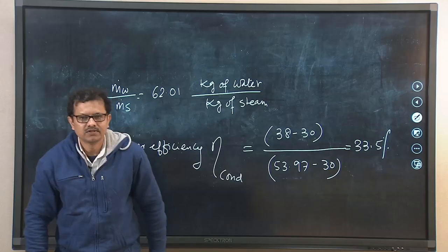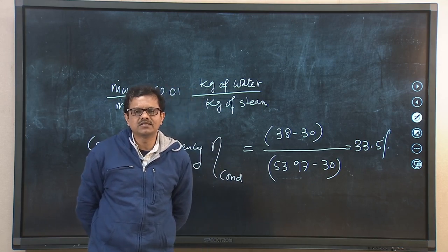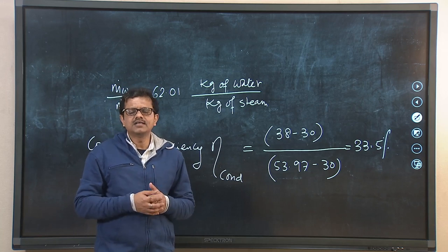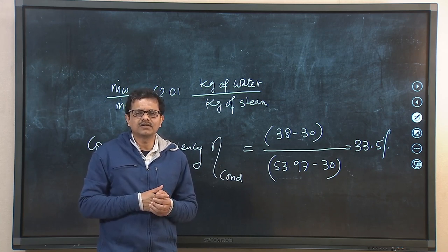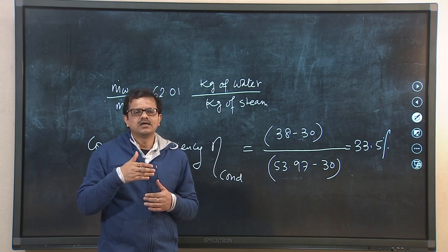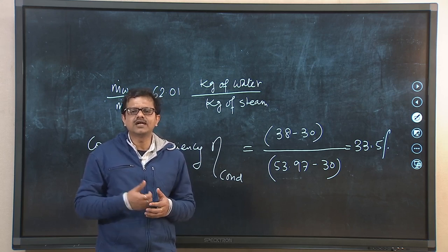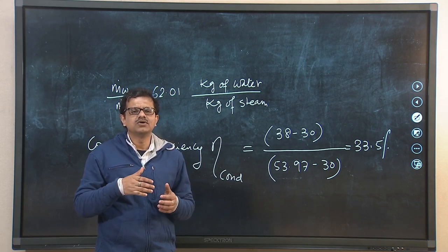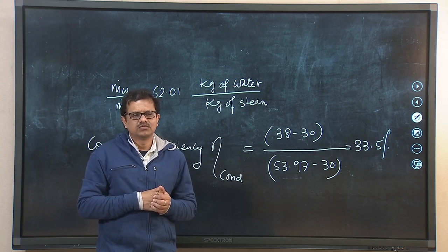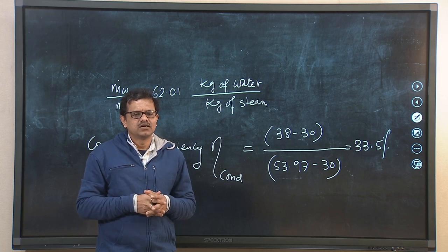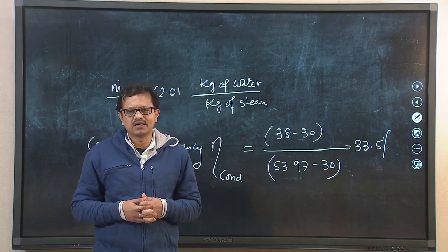To summarize today's discussion: we have discussed the performance of cooling towers by defining three important parameters — approach, range, and efficiency — and examined their physical significance. We also discussed the losses of water as it passes through the cooling tower — evaporation loss, drip loss, and blow down loss — and how these indirectly affect cooling tower performance. Finally, we solved one numerical problem involving a condenser. We shall continue our discussion in the next class.